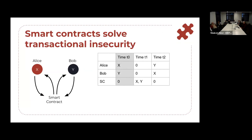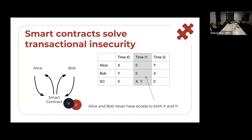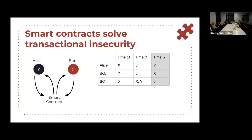Smart contracts solve this problem of transactional insecurity, and this is really cool. If we introduce a smart contract, instead of Alice giving X to Bob, Alice and Bob can both put their assets in the smart contract. In the registry or ledger, the smart contract is holding assets in the same way that Alice and Bob are holding assets. Alice's address has X at time T0. Bob's address has Y at time T0. At time T1, the smart contract address is now the holder of the digital assets. Alice and Bob never have access to both X and Y, and so we've solved the problem of transactional insecurity. We fulfilled the exchange safely.